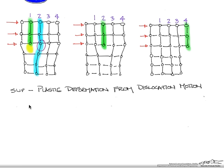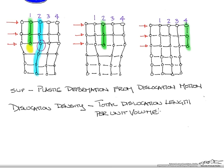As our materials solidify, we have different types of dislocation densities associated with that metal. Dislocation density is defined as total dislocation length per unit volume.